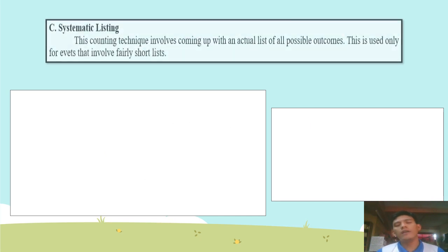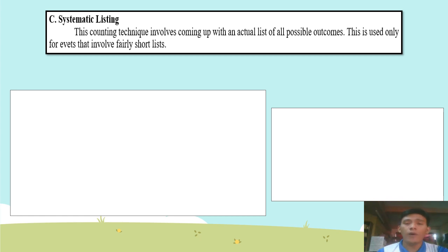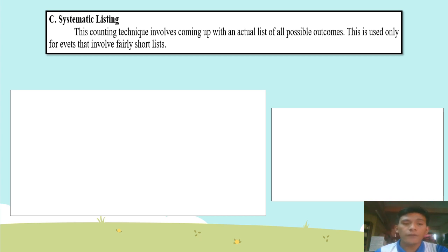Now let's go to the last one — systematic listing. This counting technique involves coming up with an actual list of all possible outcomes. This is only used for events that involve fairly short lists.